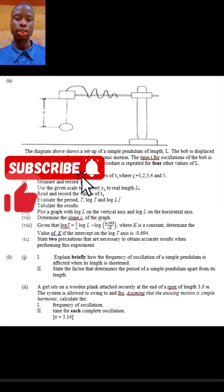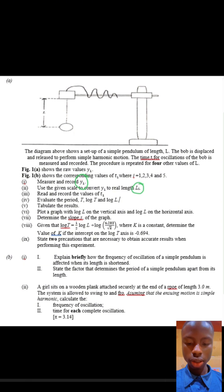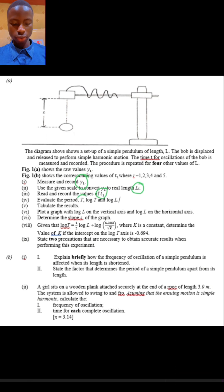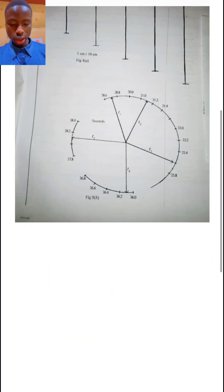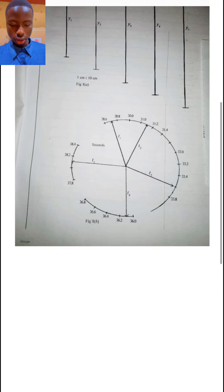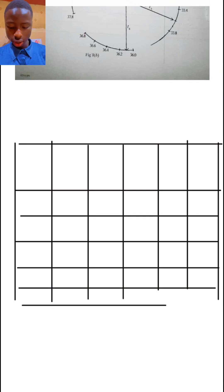First, we need to draw our table of values. The columns of the table will be found in the question. Over here we have Y in centimeters. We should read and record the value of Y, and we should convert Y to its original length L. We should also read and record the values of T — the time, the period for 20 oscillations, log of the period, and log of L. Since we now have the column values, let's draw our table of results. Because we have 6 values, you need 6 columns for the table of results.